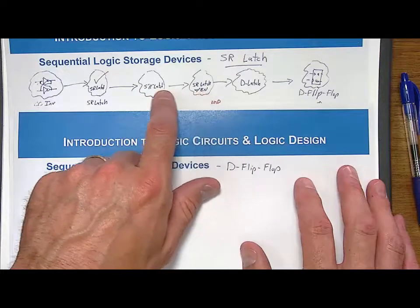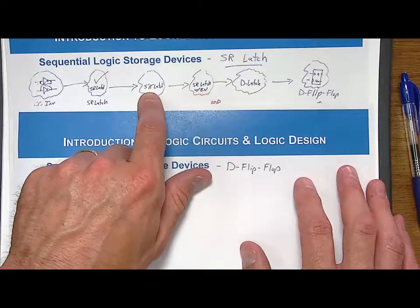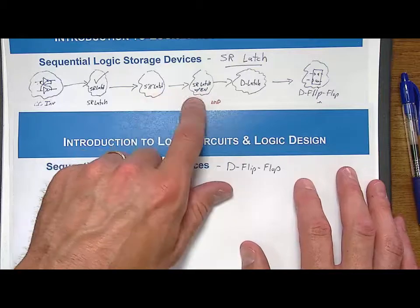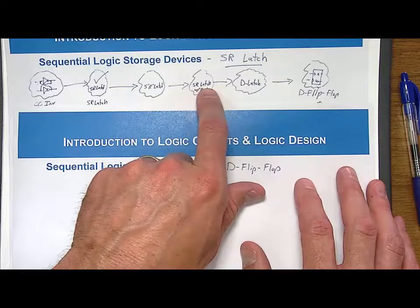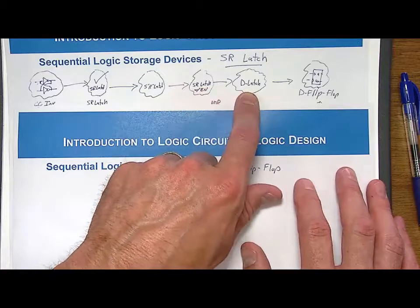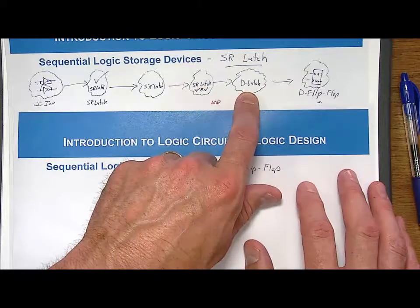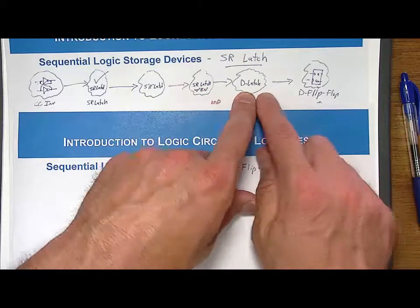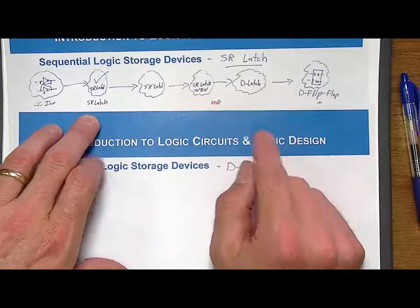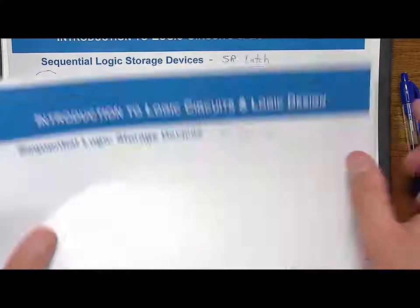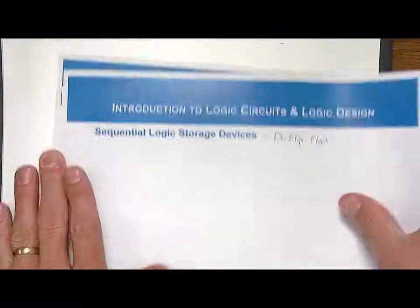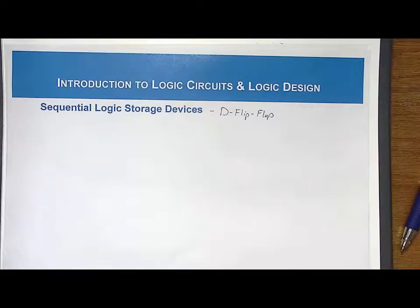We had to have the S-bar R-bar latch because the enable circuitry would invert S and R, so the latch had to operate with opposite polarities on input. Then we limited S and R to be opposite to each other by putting an inverter in the SR latch with enable to form the D latch. Finally, we can create a D flip-flop using two D latches.